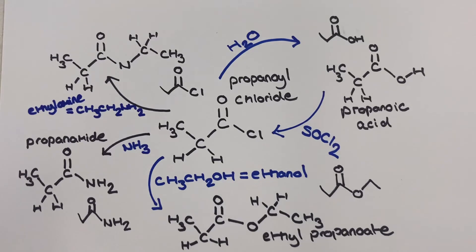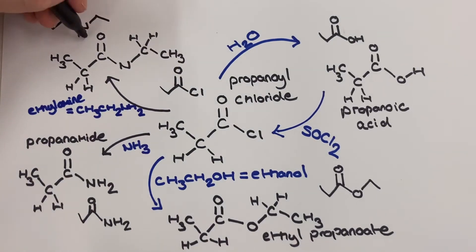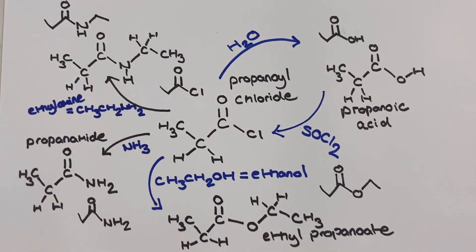The secondary amide product is different from the primary amide product as you can see it has a further carbon chain attached to the nitrogen in the final product.